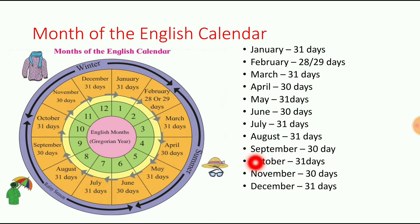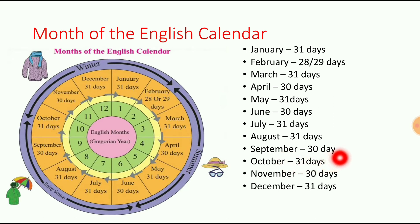Next: September. S-E-P-T-E-M-B-E-R. September is the ninth month. September कौन सा महीना है? Ninth month है. September has 30 days.